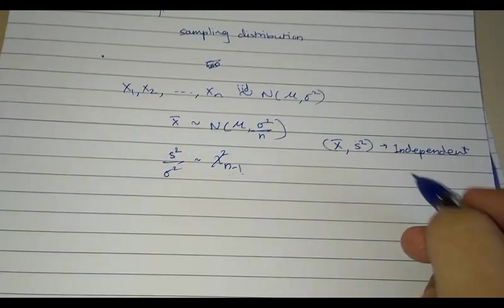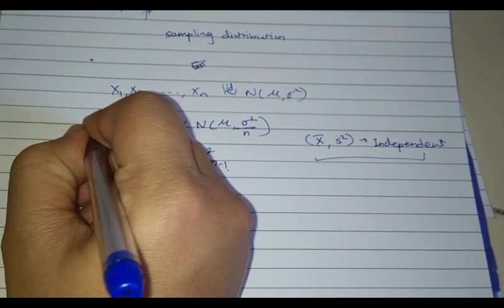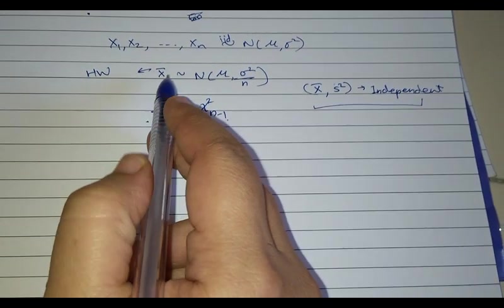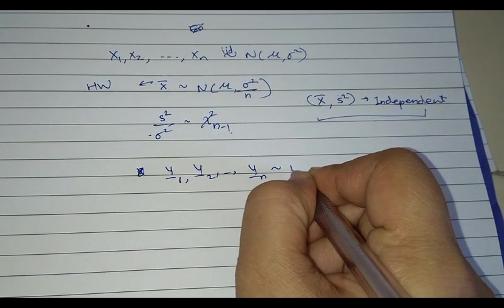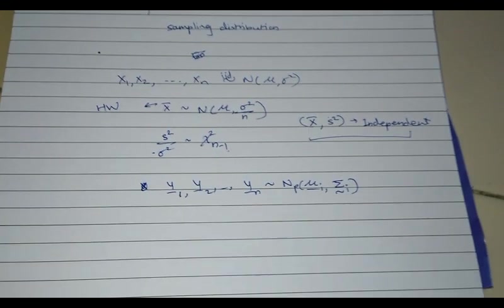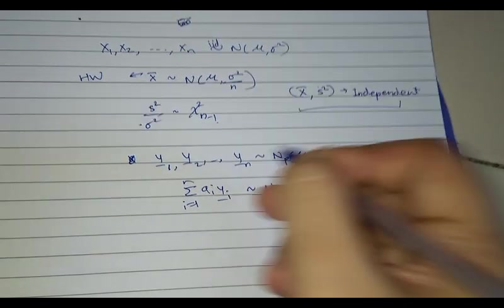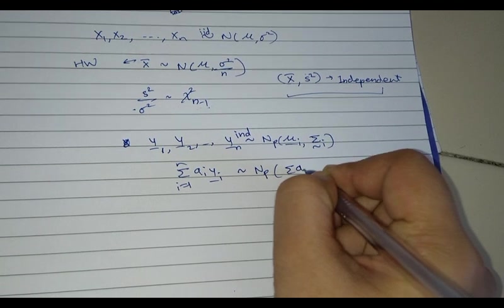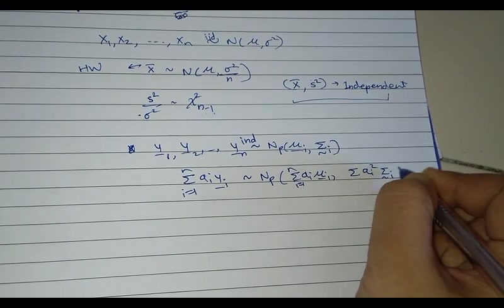In the multivariate setup, so far we have done only the part equivalent to independence. We are yet to establish the distributions. The distribution of X-bar is going to be homework, because it is quite easy. We have already proved a result that if Y1, Y2, ..., Yn come from p-variate normal, then the distribution of Σ ai Yi (i from 1 to n) will again be normal if they are independent, with mean Σ ai μi and variance Σ ai² Σi.